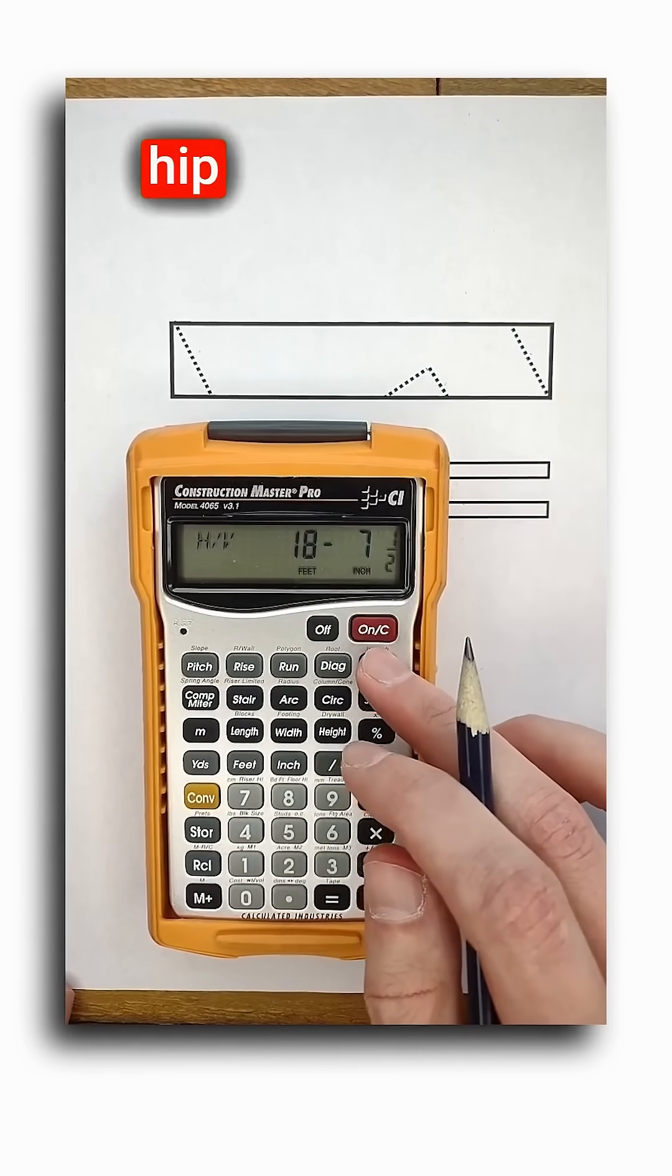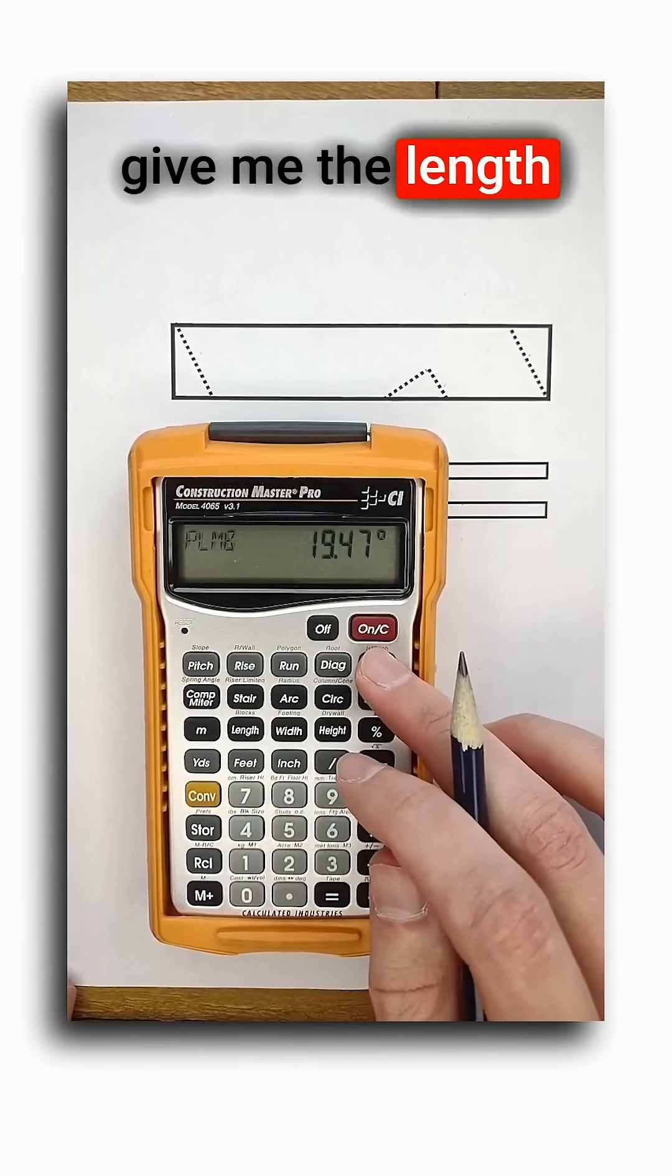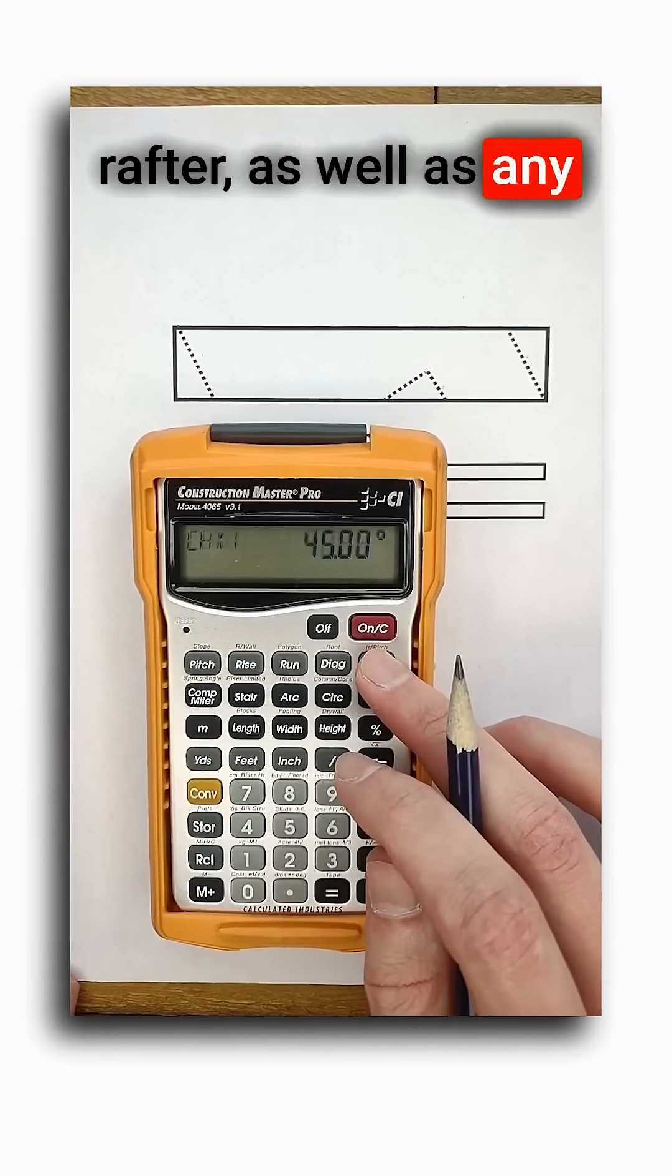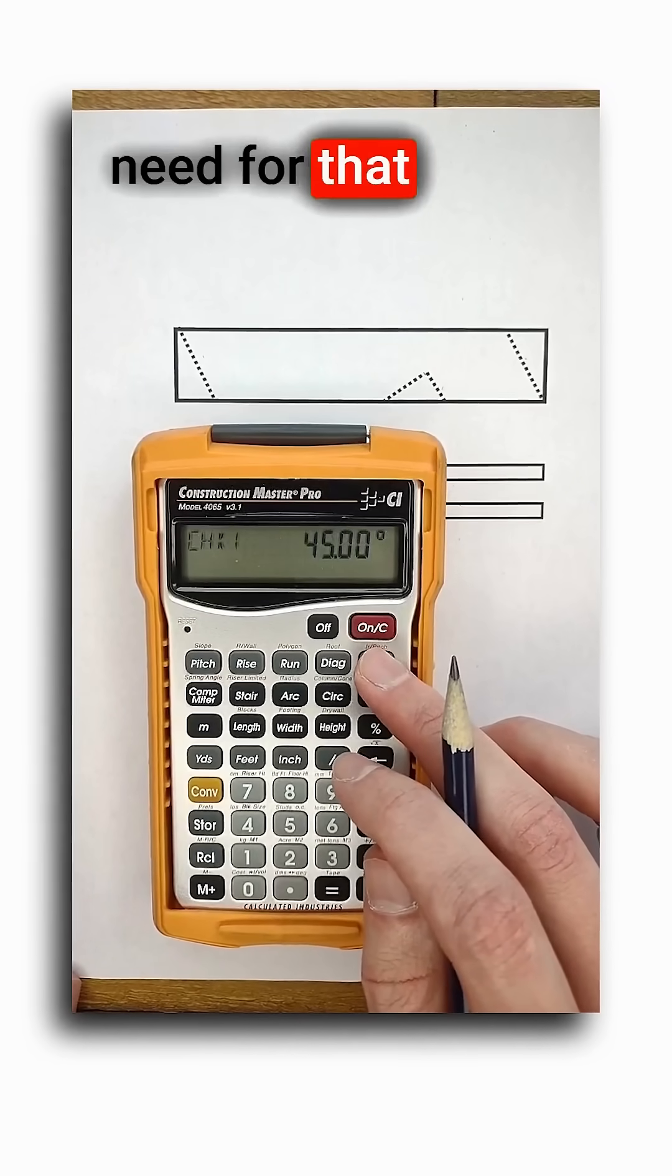Now pushing the hip V button will give me the length of the hip or valley rafter, as well as any plumb or level cuts I need for that rafter.